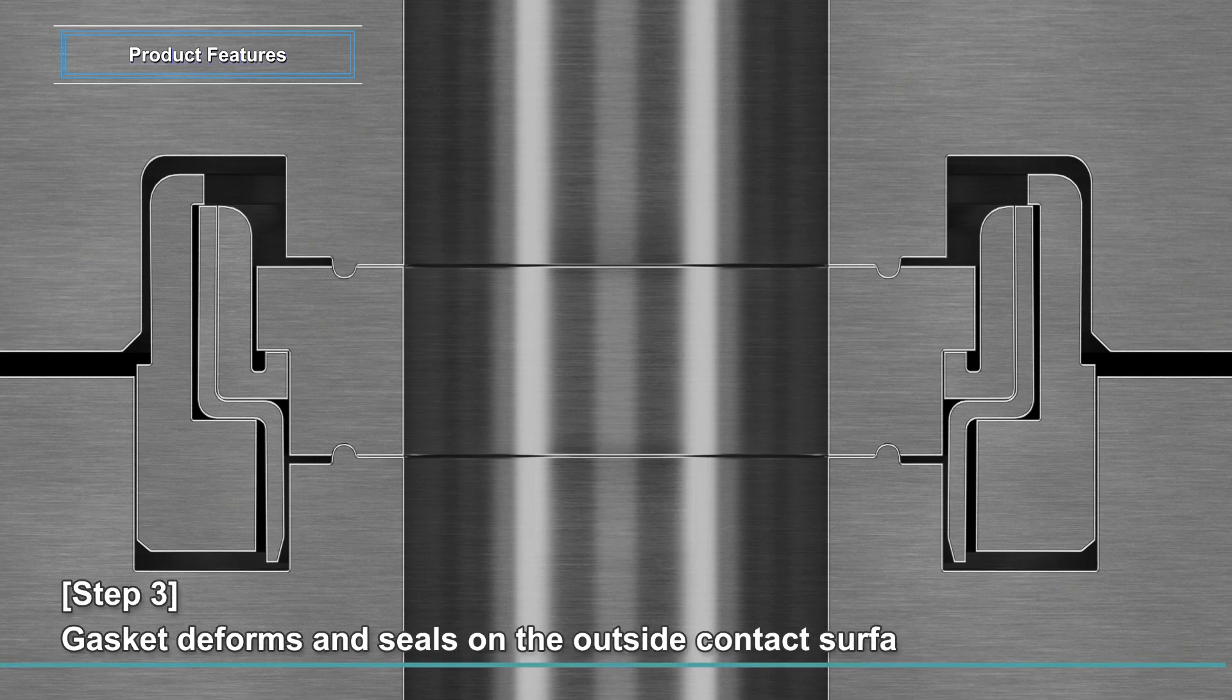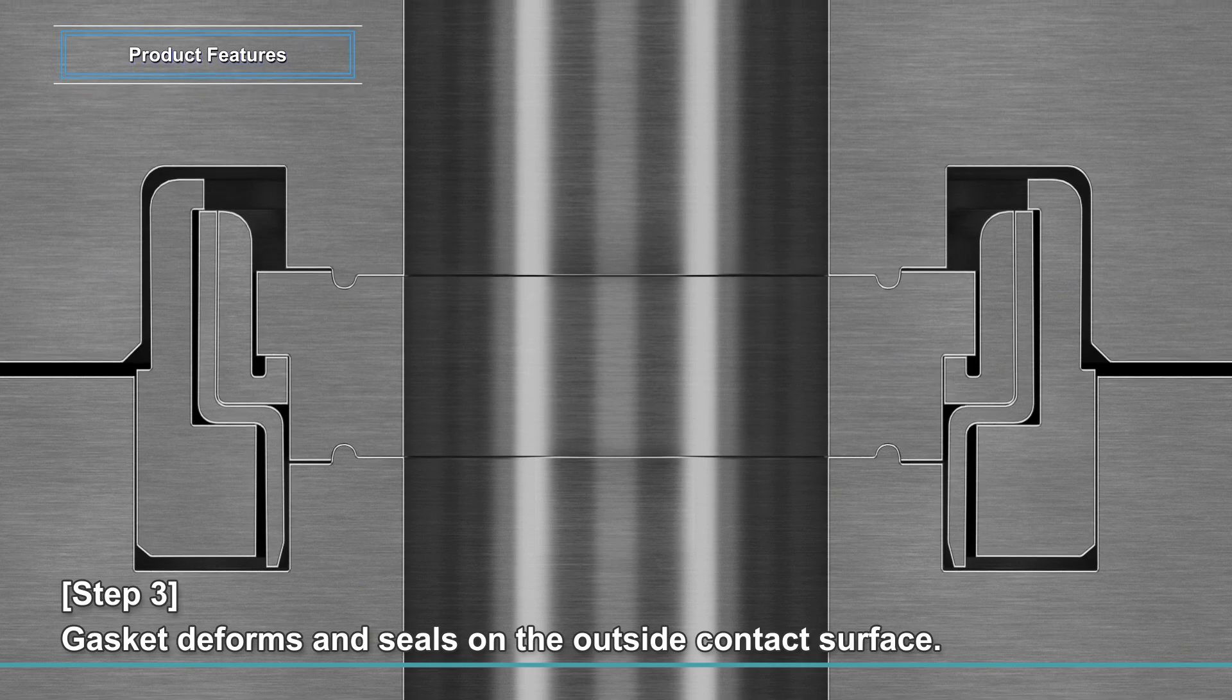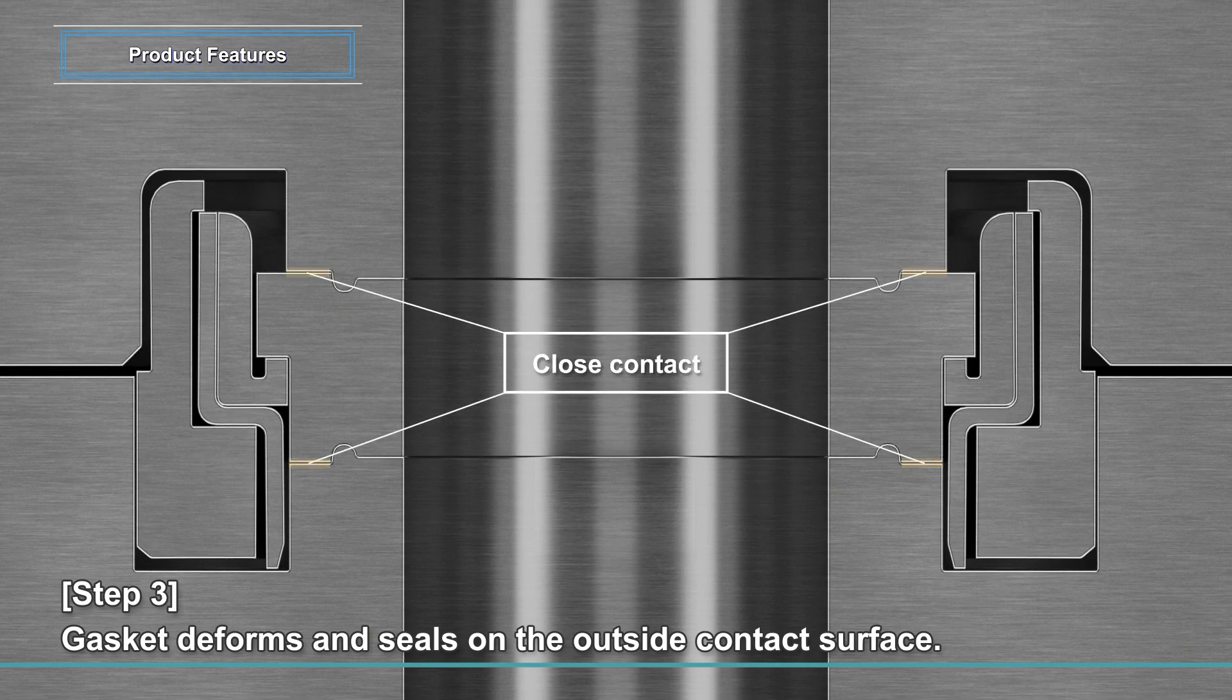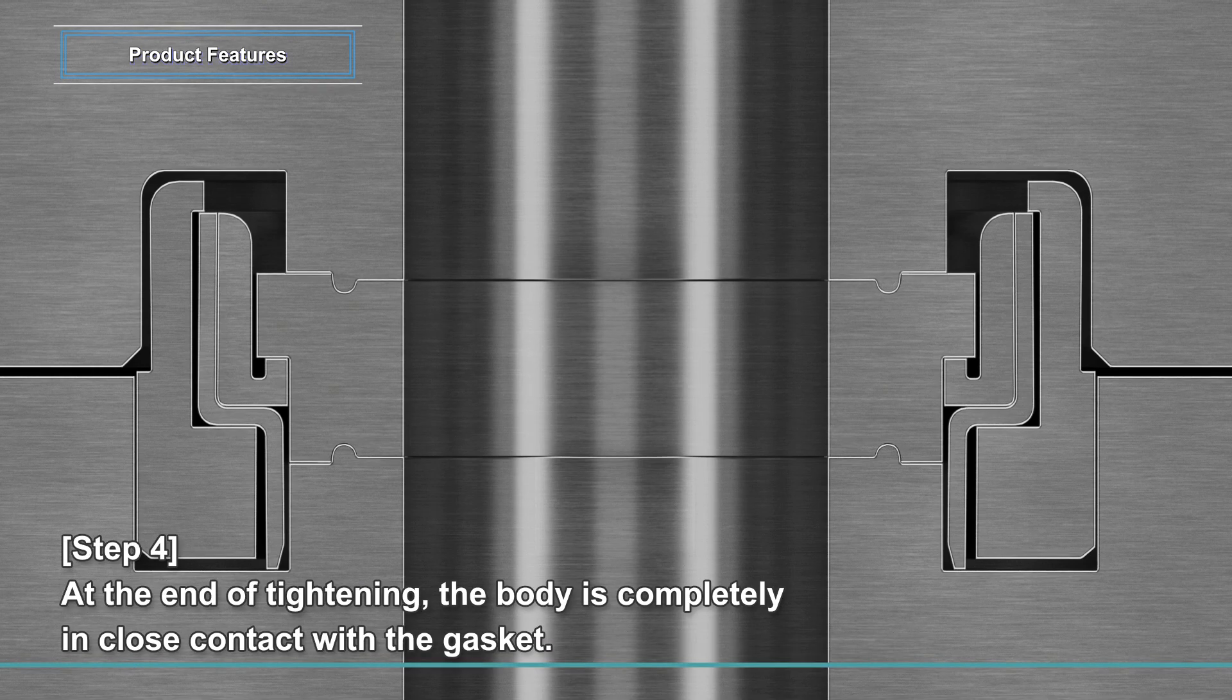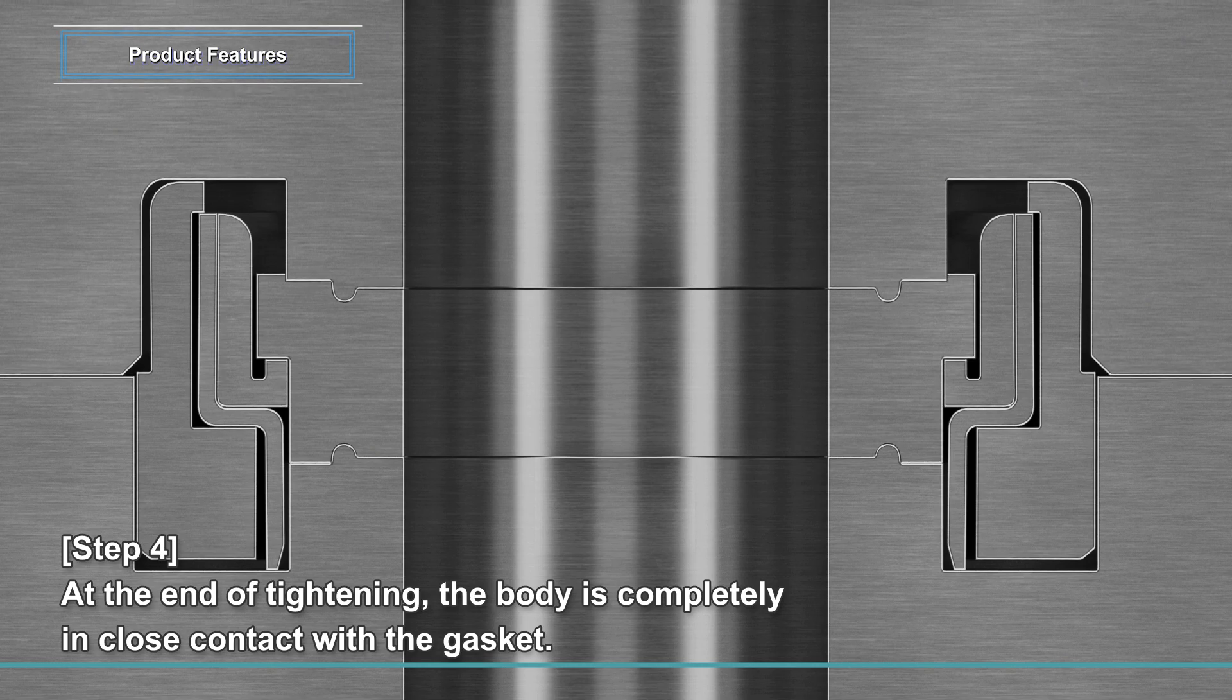Step 3: Further tightening allows the outside of the seal tip to be in close contact with the gasket surface. Step 4: At the end of tightening, the body is completely in close contact with the gasket.